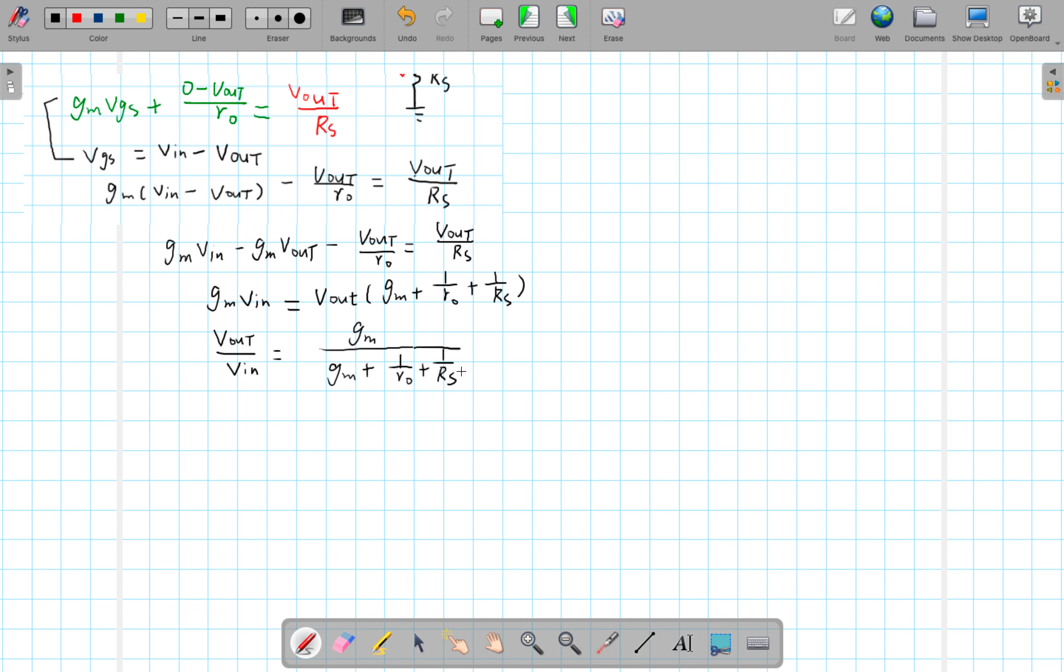GM times Vout over R0 equals to 1 over Rs. So we can further massage this equation. We know that for a resistor R0 and Rs if they're in parallel configuration this can be written as R0 times Rs over R0 plus Rs.